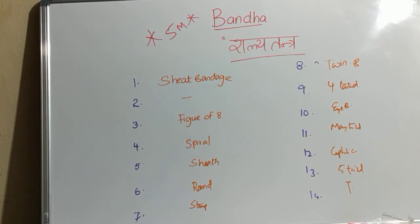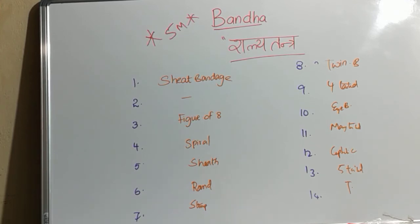First, Kosha can be correlated with a sheet bandage, Dama with nothing, Swastika with figure of 8, Anuvalita with a spiral, Pratholi with a sheet bandage, Mandala with a round bandage, Shagika with a stump bandage, and Yamaka with a twin bandage.